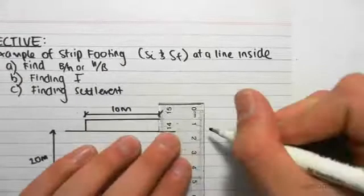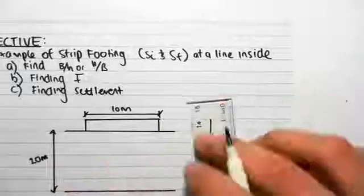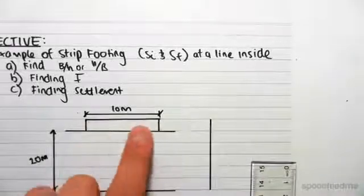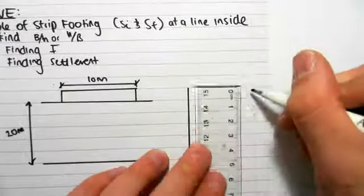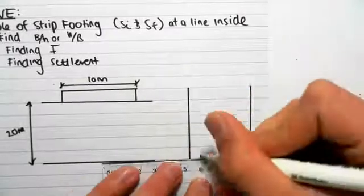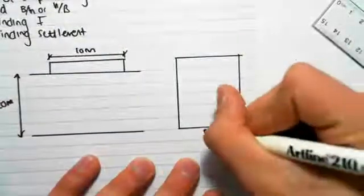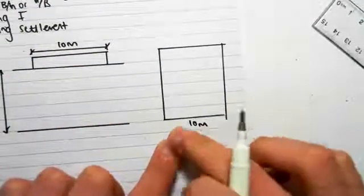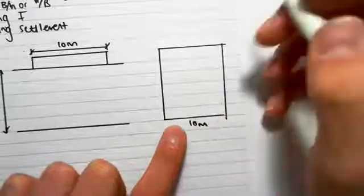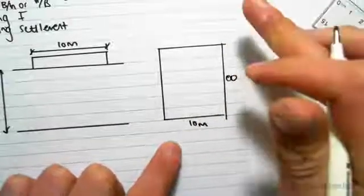With a strip footing, we can define a strip footing. This is in section. This is the strip footing on the profile of soil. In plan, a strip footing has a dimension of 10 meters, which is what we've got here. Relative to this dimension, this dimension is pretty much infinity, it goes on forever.